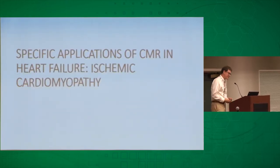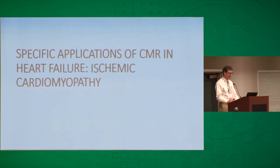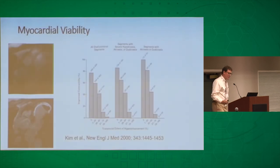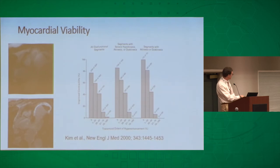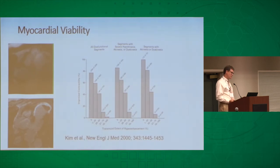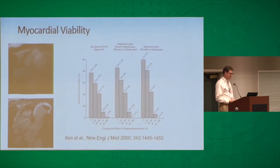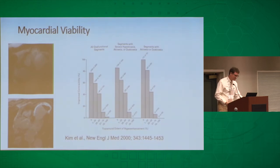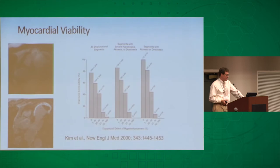Ischemic cardiomyopathy is a very common etiology of heart failure. Here's an example — the bottom panel is a three-chamber view after gadolinium contrast was administered, showing a bright subendocardial distribution of abnormal contrast in most of the septum and the apex. You can also see an LV thrombus — the dark signal at the apex. Once people realized this, you could quantify how much of the ventricle is affected by infarction. This represents an MI.